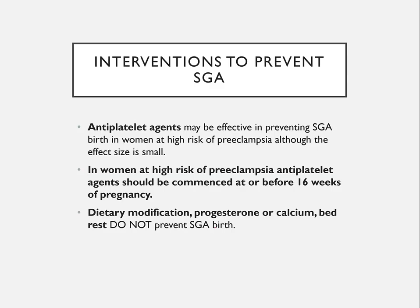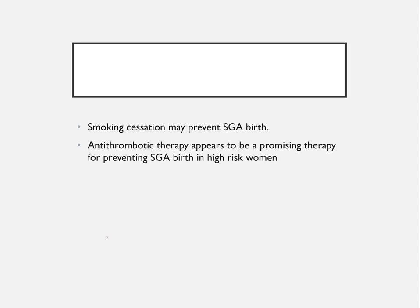Can we do anything to improve fetal wellbeing? Interventions available are very limited. The only intervention of some benefit is low-dose aspirin, usually started around 16 weeks or even from 9 weeks, especially if the mother has had previous small babies or risk factors. Other modifications such as dietary changes, progesterone, calcium, and bed rest have not been shown to be of value in preventing a small baby. Smoking cessation may help. Antithrombotic therapy may be of use in high-risk women.